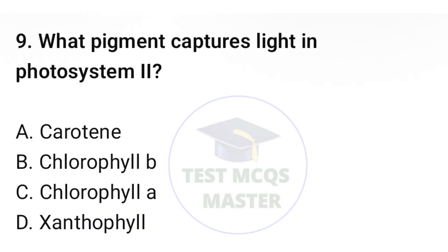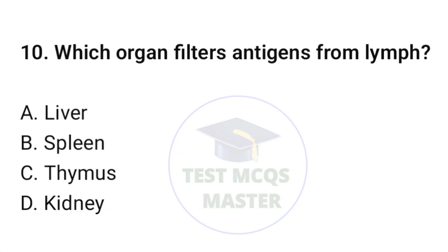Question number nine: what pigment captures light in photosynthesis? The correct option is C, chlorophyll A. Question number ten: which organ filters antigens from lymph? The correct option is B, spleen.